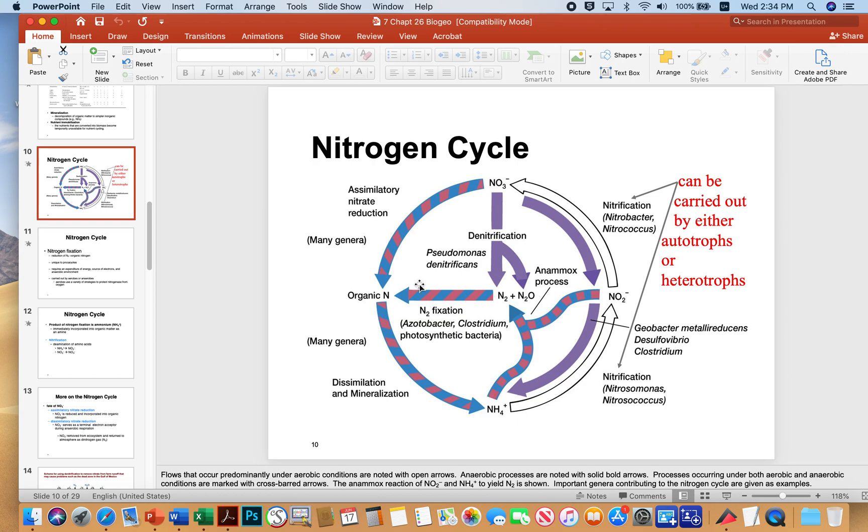The nitrogen cycle involves a variety of complex reactions, and so the name of the reaction is indicated, the types of microbes that undergo the reaction is also listed here and there. I want you to have a nice holistic view of this nitrogen cycle. We could start in the middle with the simplest form, nitrogen gas, which is the most abundant gas in the atmosphere, and so microbes can actually fix nitrogen.